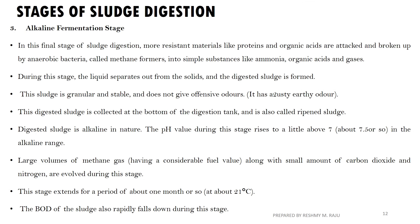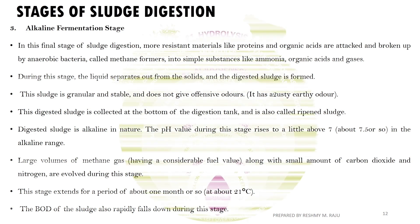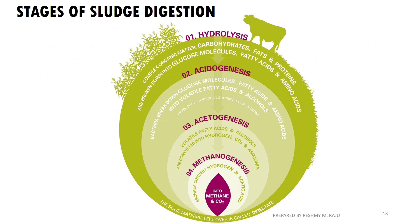The third stage is alkaline fermentation. When the liquid separates from the solids in the digester, the sludge becomes granular and stable and does not give any offensive odors. The digested sludge is of alkaline nature, with pH a little above 7. It is collected for various purposes. The BOD reduction is achieved around 21 degrees Celsius within about one month.